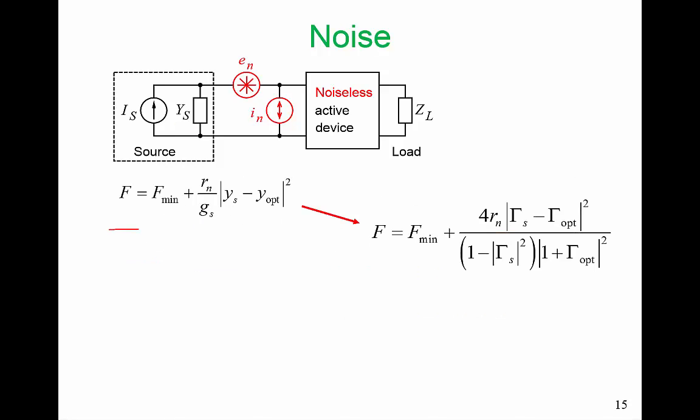After some manipulation, we can take this formula, which is in terms of admittances, and put it in terms of a formula with reflection coefficients. What we really like about this formula with reflection coefficients is that we can start representing this information on a Smith chart, because, of course, on a Smith chart, we're going to plot reflection coefficient as a complex number.